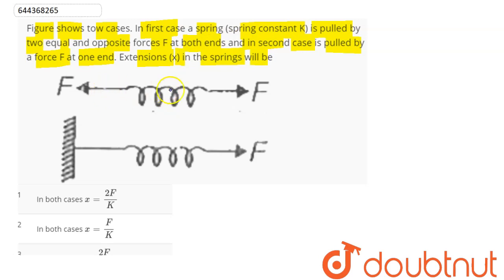In the first case, if elongation is x1, spring force on the right side will be kx1 to the left and on the left side will be kx1 to the right. By equilibrium, F equals k times x1, as F balances from both sides. Hence x1 comes out to be F/k.